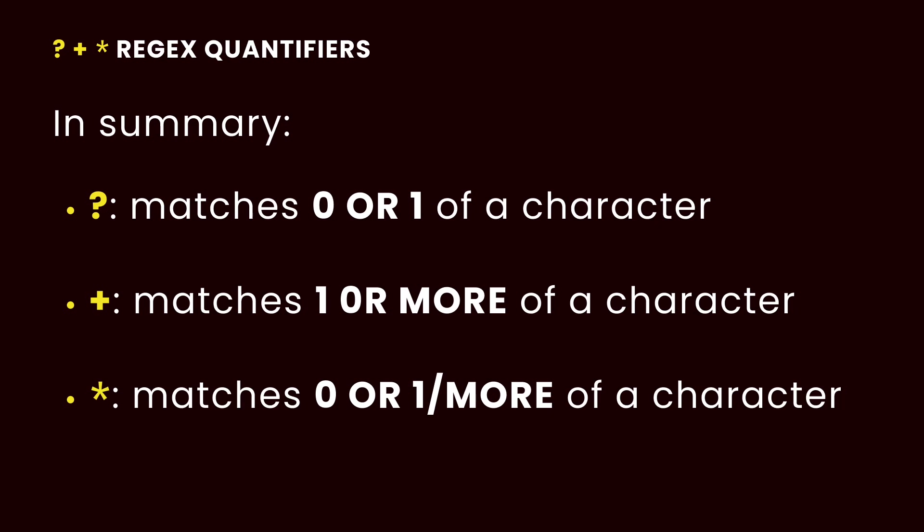In summary, the difference between these quantifiers is that the question mark quantifier matches zero or one of a character. The plus sign quantifier matches one or more of a character. And the asterisk sign quantifier matches zero or one or more of a character. Now let's look at examples for each of them.